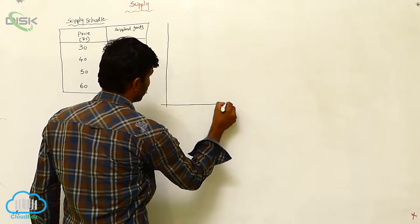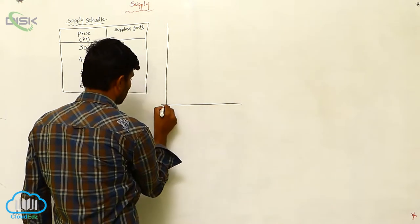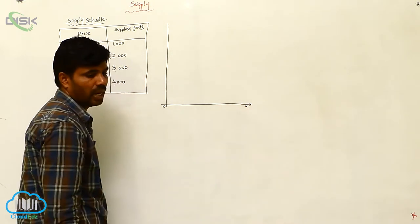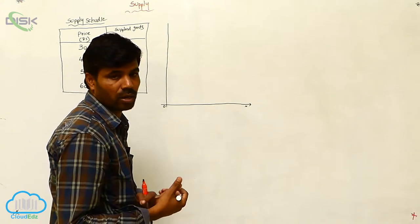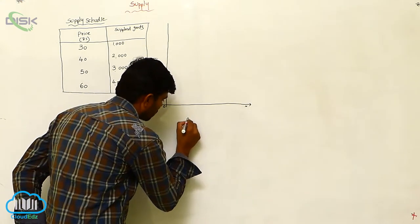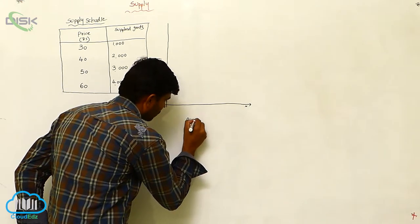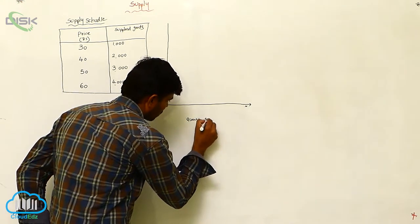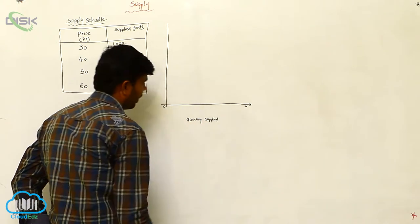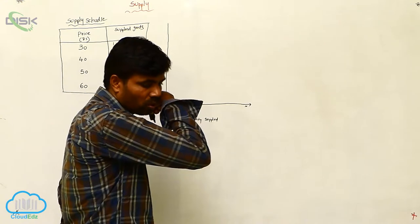This is where we are going to show OXX. OXX we are going to consider quantity supplied. This Y axis is price.